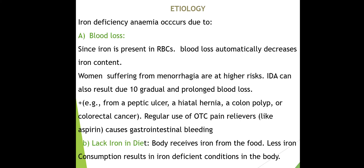Severe blood loss can occur from accidents. Women with menorrhagia conditions experience prolonged and excess bleeding. Regular use of over-the-counter drugs like aspirin can cause GI bleeding, leading to blood loss.